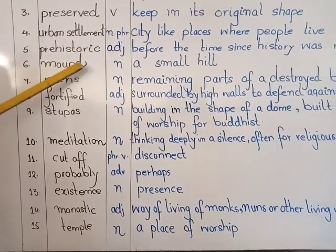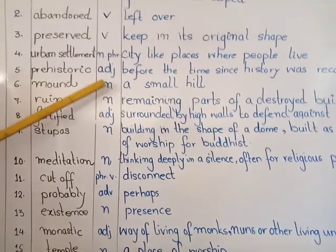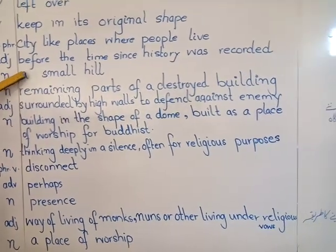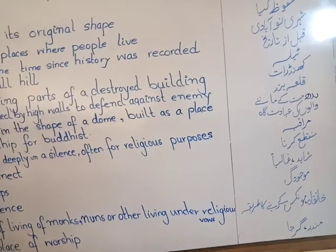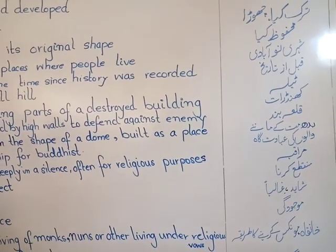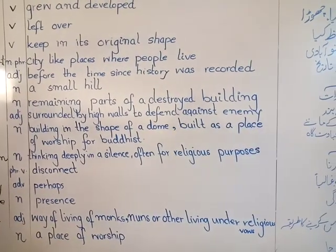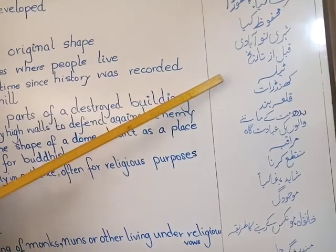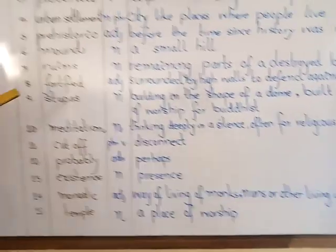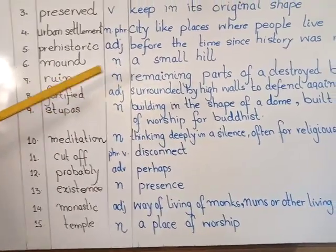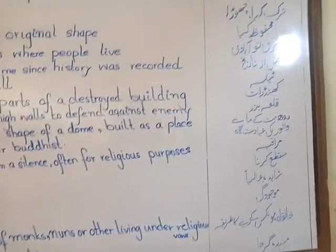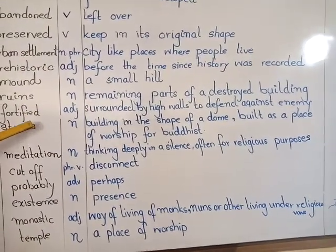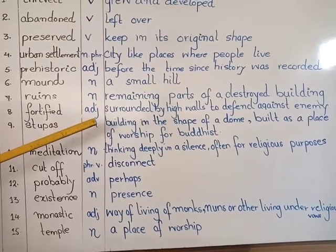The fifth word is 'prehistoric', which is an adjective. It means before the time since history was recorded — qablul taarikh. The sixth word is 'ruins'. The Urdu meaning is dhelay. The English meaning is the remaining parts of a destroyed building.